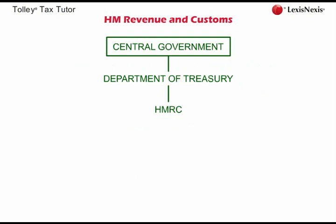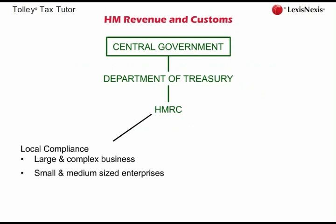In this session and the ones that follow we are concerned with the administration of Income Tax and Capital Gains Tax. Rather than use the long-winded name of HM Revenue and Customs, we will refer simply to HMRC. HMRC manage the UK tax system on a day-to-day basis through a local compliance structure organised on a functional basis, divided into three taxpayer or customer groups: large and complex businesses, small and medium-sized enterprises, and individual and public bodies.